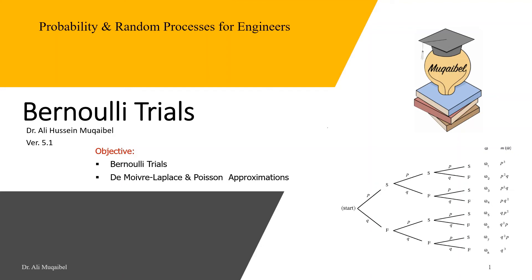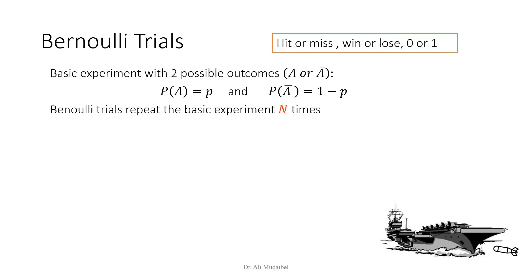Welcome. We're doing Bernoulli trials and we'd like to cover two things: Bernoulli trials and the related approximations — De Moivre-Laplace and Poisson approximation. What are Bernoulli trials? We call an experiment a Bernoulli experiment if it ends up with one of two possible outcomes: hit or miss, win or lose, zero or one. Those are called Bernoulli experiments.